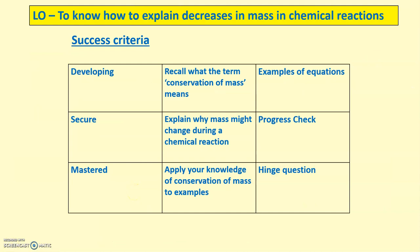The success criteria for this learning session are just to, for developing, recall the term conservation of mass, what it means, with a couple of example equations. For secure knowledge, going to explain why mass might change during a chemical reaction with a progress check. And then to master this technique, going to apply your knowledge of conservation of mass to examples and consolidate with a hinge question.